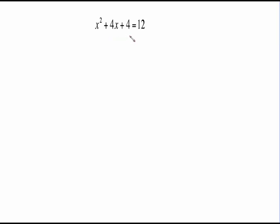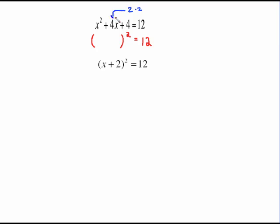x squared plus 4x plus 4 equals 12. What it equals over here doesn't matter. What matters is that this right here could be factored into something squared — and what this factors into is x plus 2 squared. Where does x plus 2 squared come from? x squared is a perfect square, 4 is a perfect square. If you take the square root of 4, you get 2, and 2 times 2 gives you 4, which is that middle number. That's what tells us we can factor this as some quantity squared.